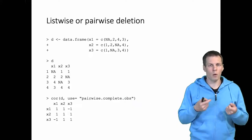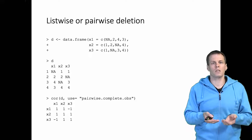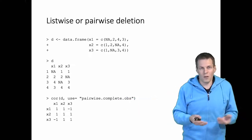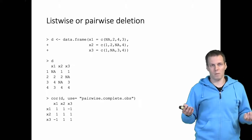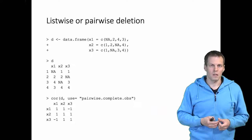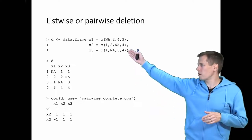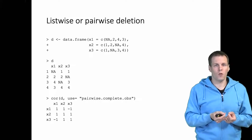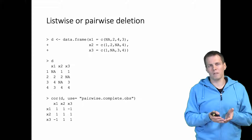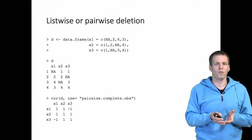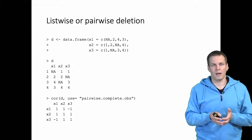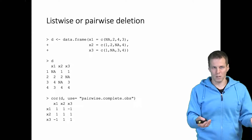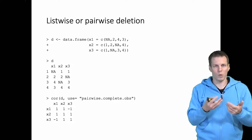This is one core problem of pair-wise deletion: it can produce correlation matrices that are impossible. If we try to use this correlation matrix in a regression analysis, the software would likely give an error that it's not a valid correlation matrix. There are also other problems — quite often we want to report a sample size for the correlation matrix, but what would we report if the sample size varies between different correlations? And if we use that matrix in further analysis, how do we calculate standard errors when sample size is not a single number?